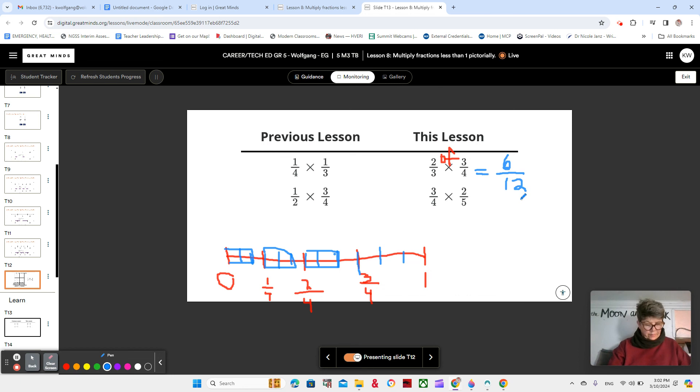So is it reasonable that 2/3 of 3/4 is 6/12? 6/12. I think so. Because it's less than 1, than 3/4. And it's less than 2/3. Okay. All right. Very good.